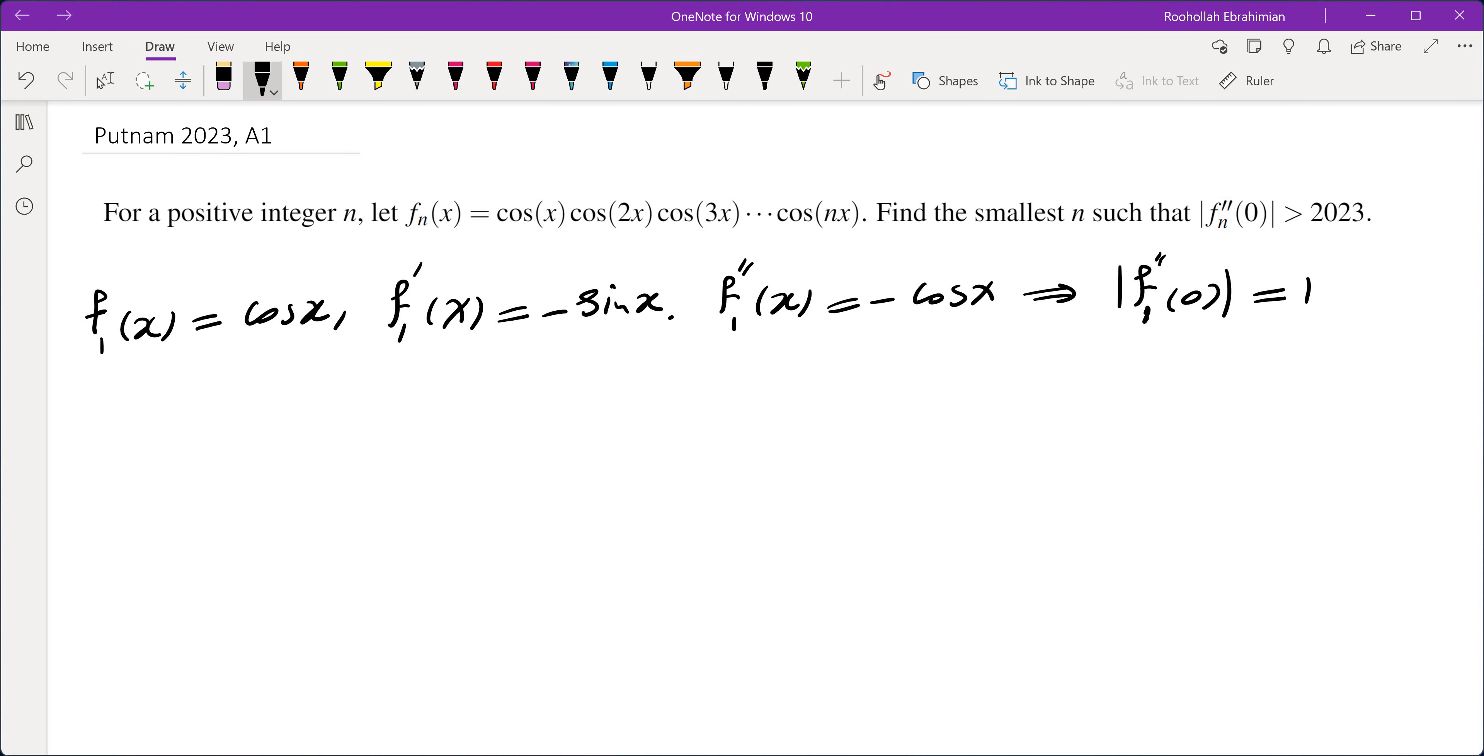If we plug in n equals 2, we're going to see a pattern a little bit easier. Things get a bit more messy. f_2'(x) becomes negative sin(x) times cos(2x), and then negative cos(x) times 2 sin(2x).